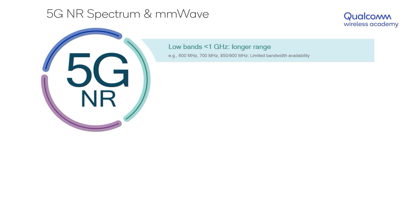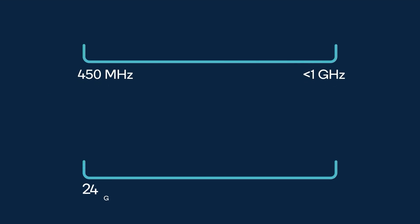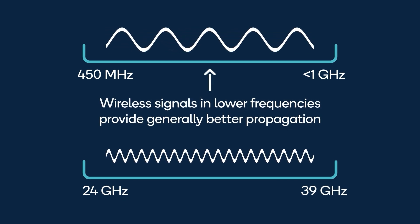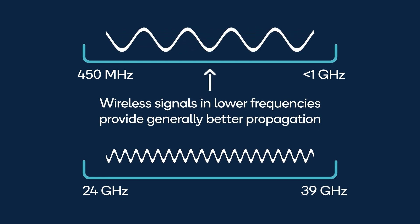The first frequency bands are those under 1 gigahertz, also known as sub-1 gigahertz frequencies. Examples include traditional frequencies like 600, 700, or 800 megahertz. One benefit of operating at such low frequencies is that the range of the wireless signal is significantly better than it would be at higher frequencies — that is how radio propagation works.